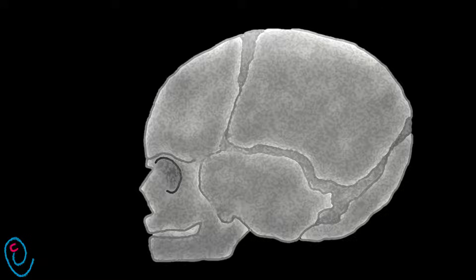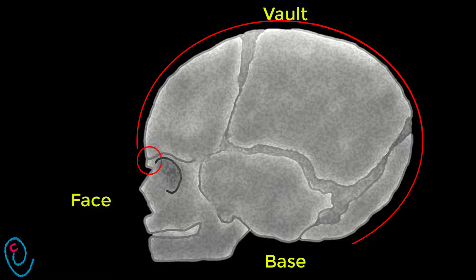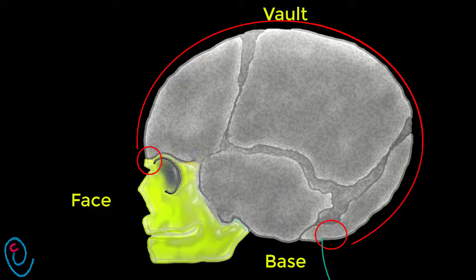The fetal skull is formed of three parts: vault, face, and base. The vault extends between the root of the nose and supra-orbital ridges until the nape of the neck. The face extends from the root of the nose and supra-orbital ridges until the connection between the floor of the mouth with the fetal neck. The base is the area between the face and vault.